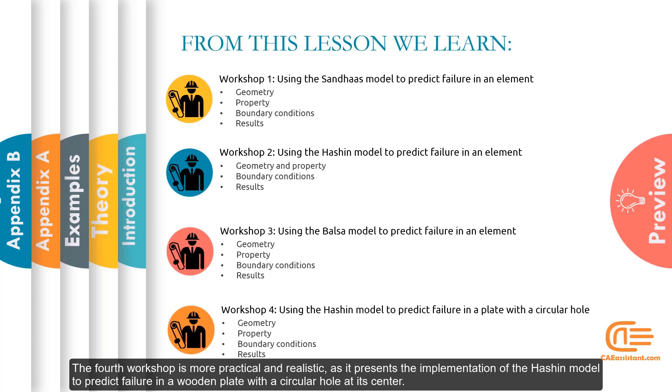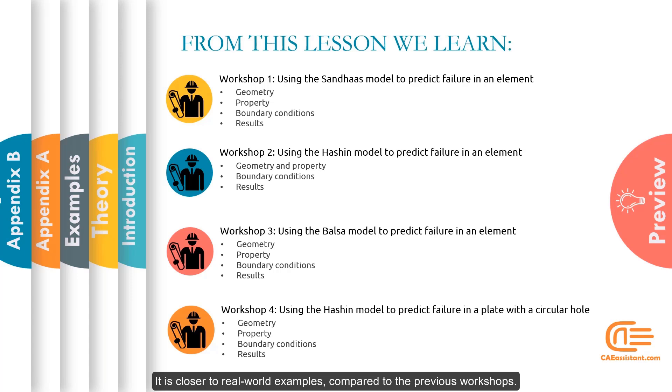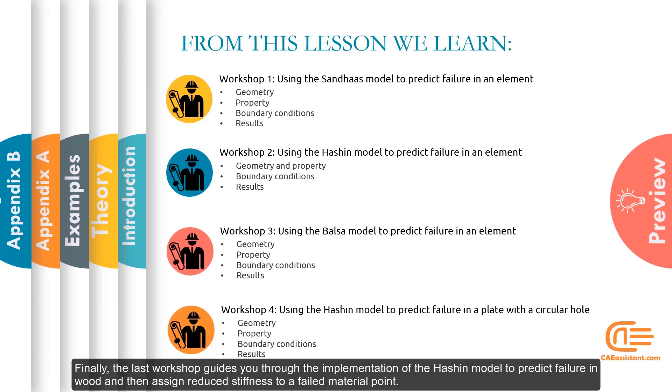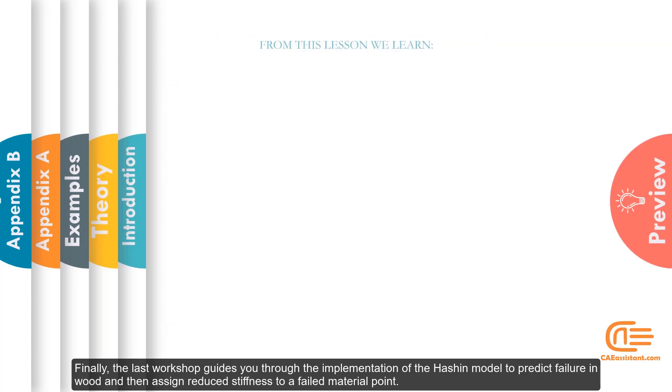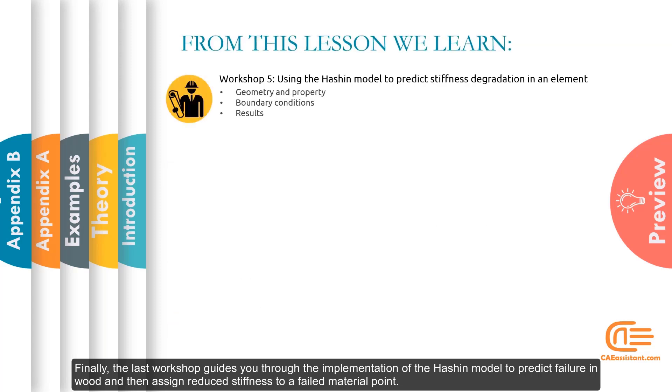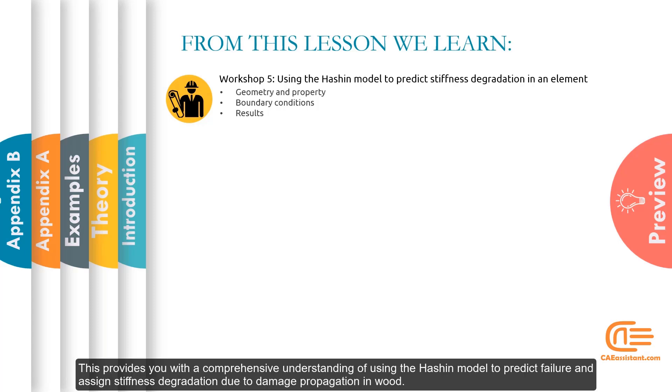It is closer to real-world examples compared to the previous workshops. Finally, the last workshop guides you through the implementation of the Hashin model to predict failure in wood and then assign reduced stiffness to a failed material point. This provides you with a comprehensive understanding of using the Hashin model to predict failure and assign stiffness degradation due to damage propagation in wood.